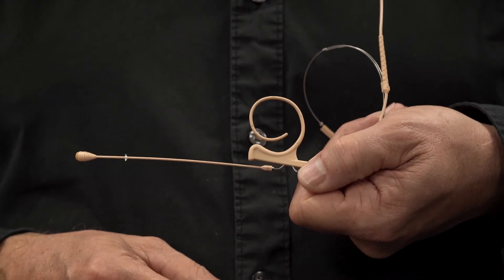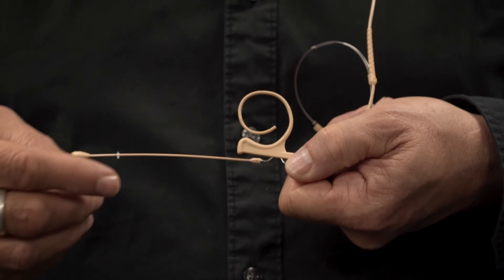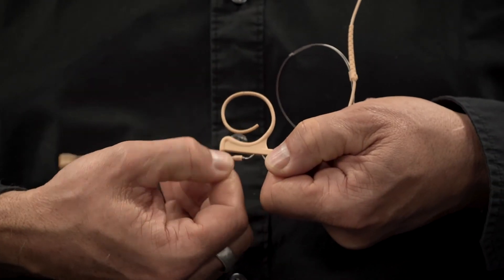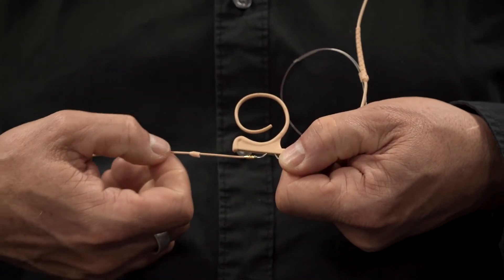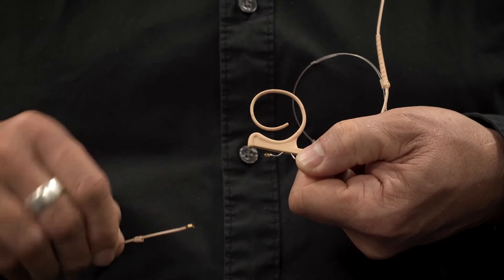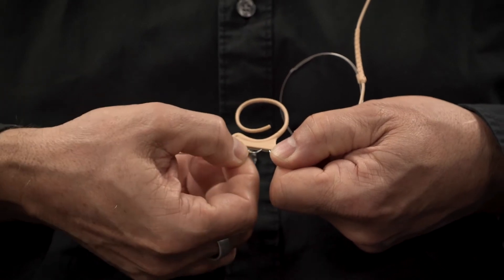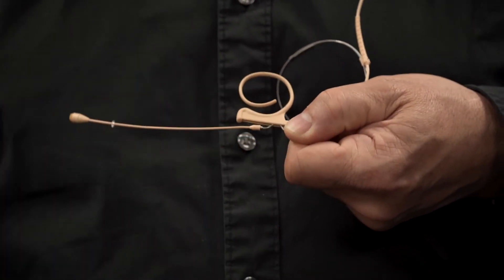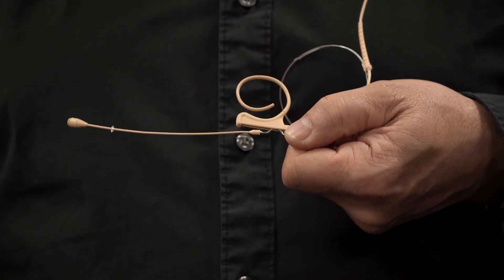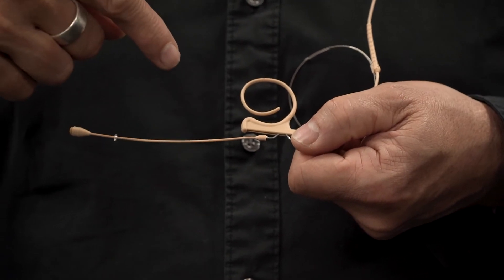This part also works as a service connector. You can open the locking cap here and pull it to separate the microphone boom from the headset. You remount it again by inserting here and pushing, making sure you place the locking cap all the way in.